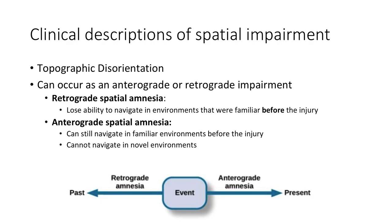Any form of topographic disorientation can occur as anterograde or retrograde spatial impairment. People who lose the ability to navigate in environments that were familiar before their injuries have retrograde spatial amnesia — they will not remember anything from before the injury. People who can still navigate in familiar environments but cannot navigate in new environments have anterograde spatial amnesia — they remember everything before the injury but cannot make new memories. Sometimes patients have both retrograde and anterograde spatial amnesia.